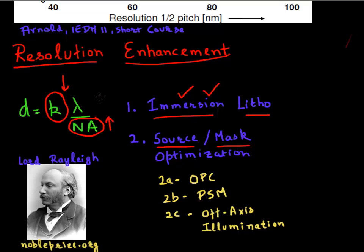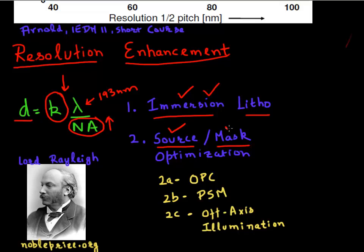A good analogy for this technique is that you have a thicker brush — a thick brush with a fixed wavelength — and you want to print fine features using that. These next resolution enhancement techniques allow you to do that by playing tricks either with the source of the light you're using or with the mask that you're using.